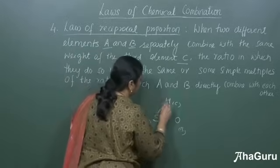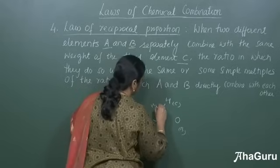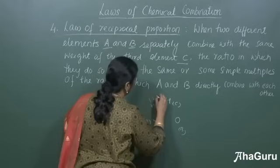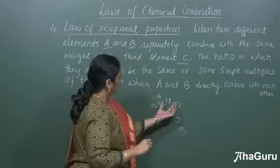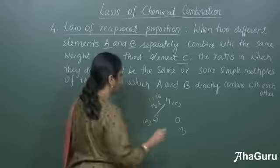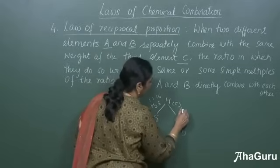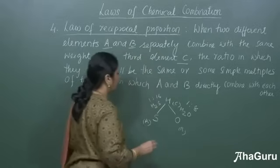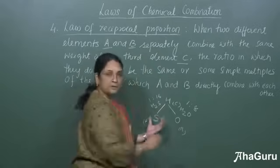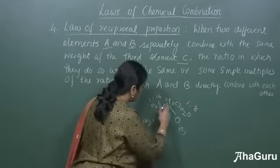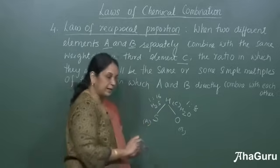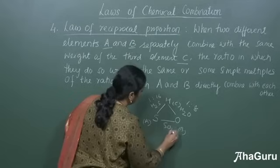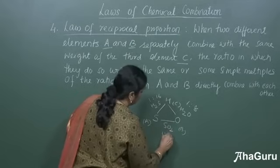Hydrogen and sulfur combine to give H₂S in the ratio 1 to 16. Now if hydrogen and oxygen combine, this will be H₂O in the ratio 1 to 8. When combining with the fixed mass of hydrogen, you can see the simple ratio. When elements A and B — sulfur and oxygen — directly combine, they form sulfur dioxide, which is in the ratio 1 to 1.